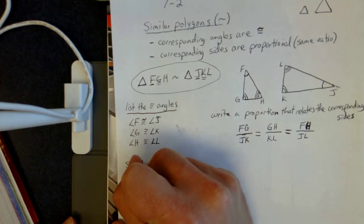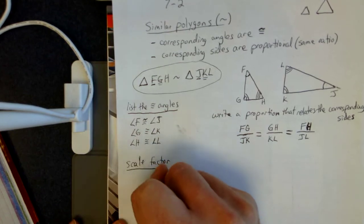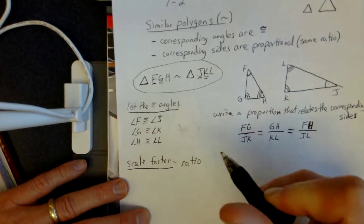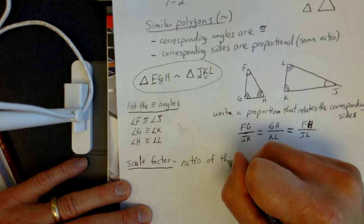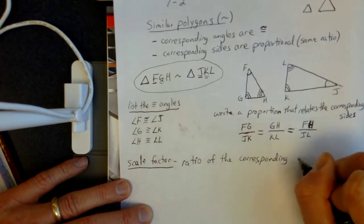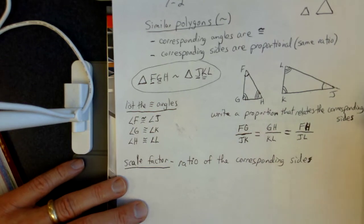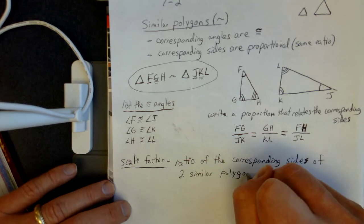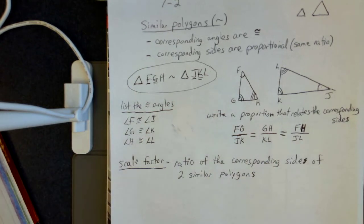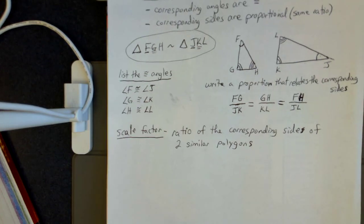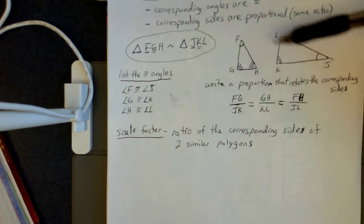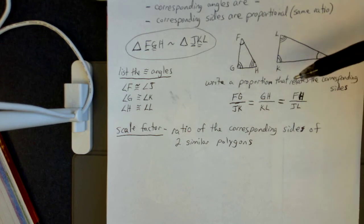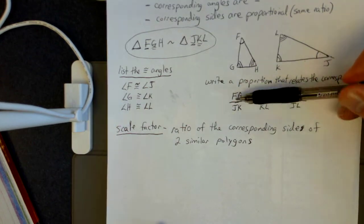Next we have a definition: scale factor. The scale factor is going to be that ratio when you line up your corresponding sides. When they give us pictures and tell us how long the sides are, we'll use those ratios to come up with what we call a scale factor. If I found the ratio of two sets of corresponding sides, that would be the scale factor.